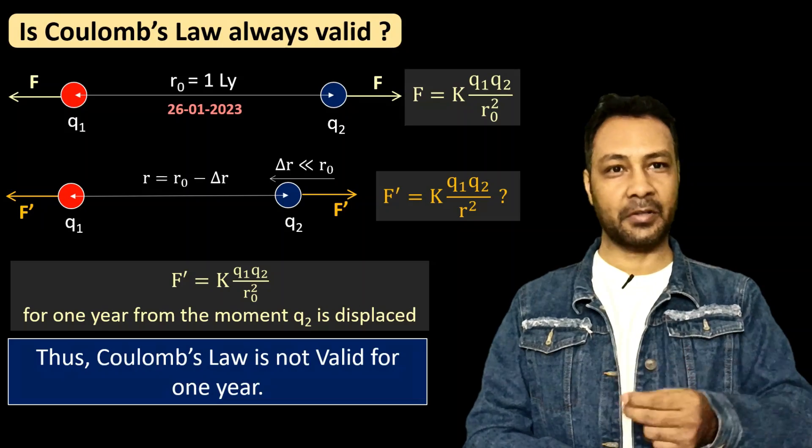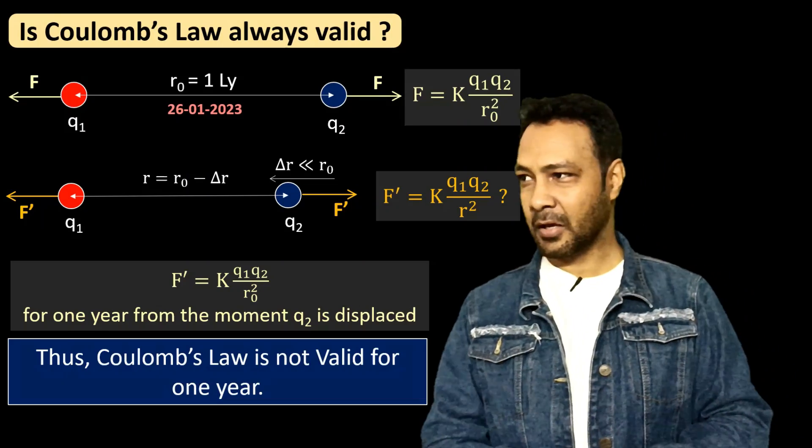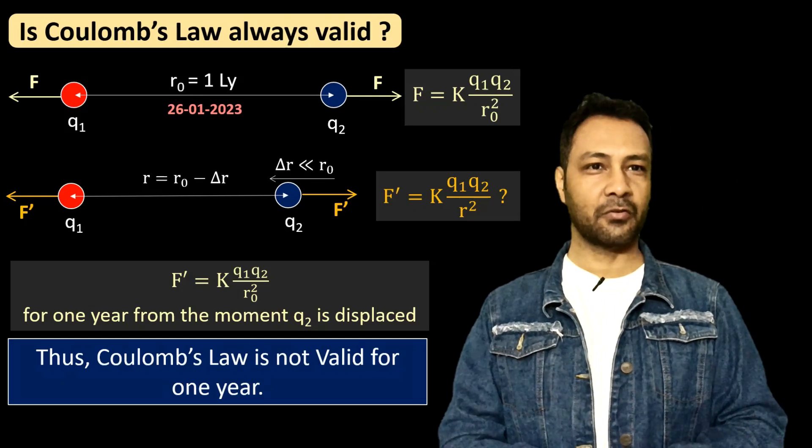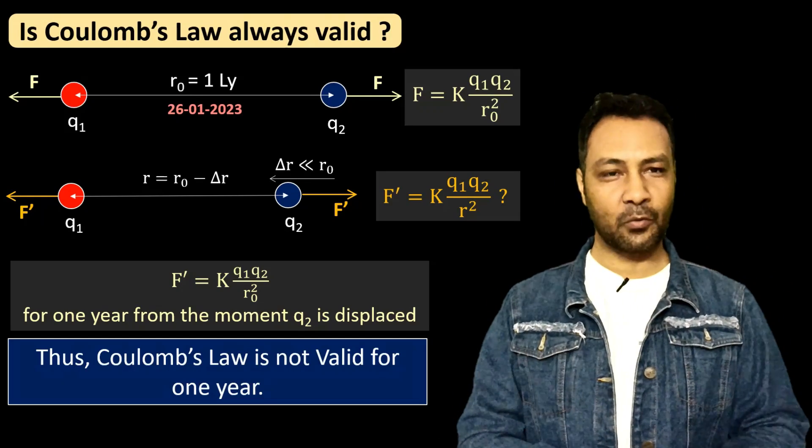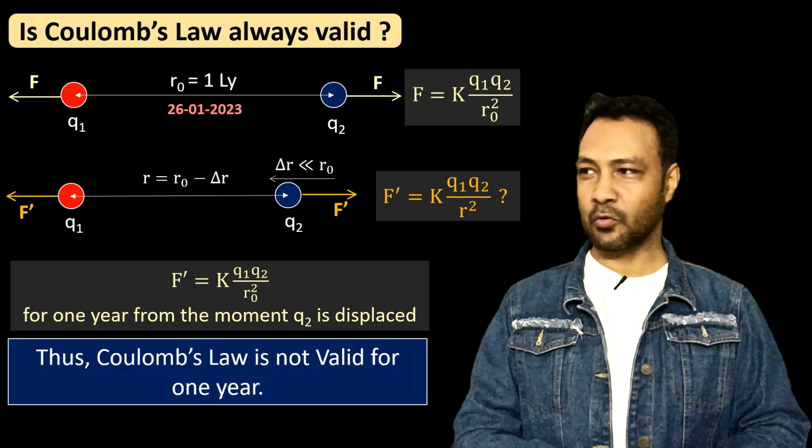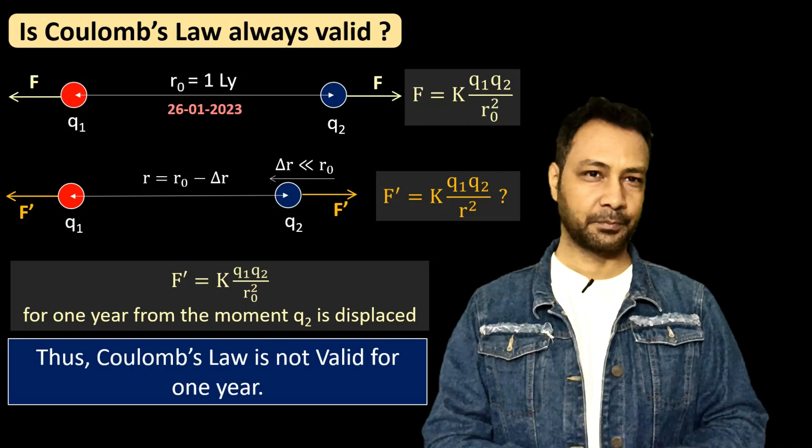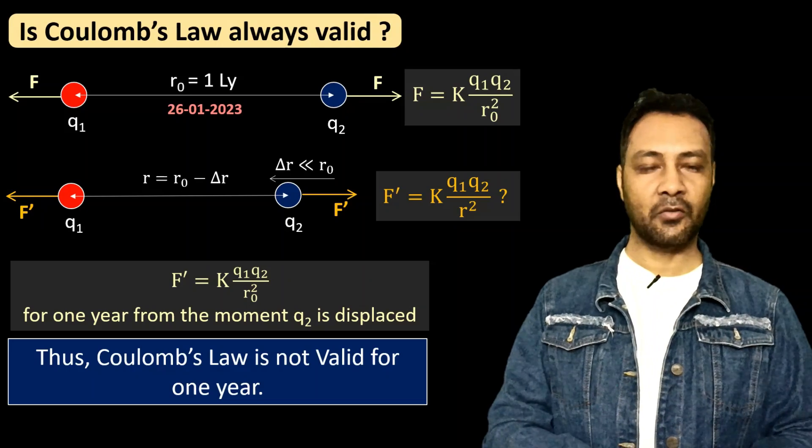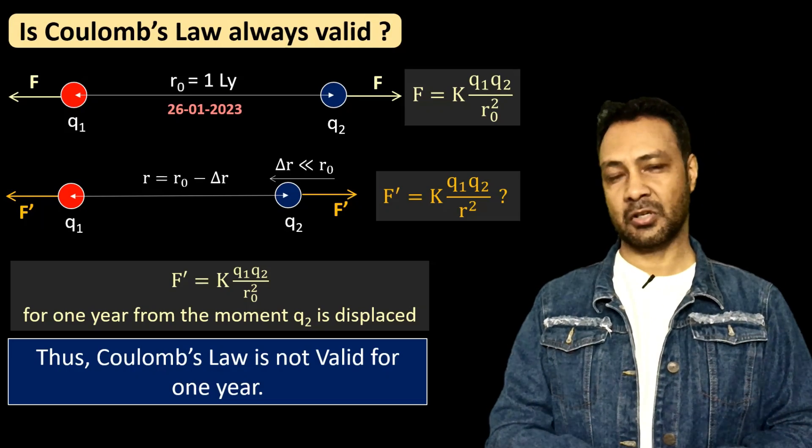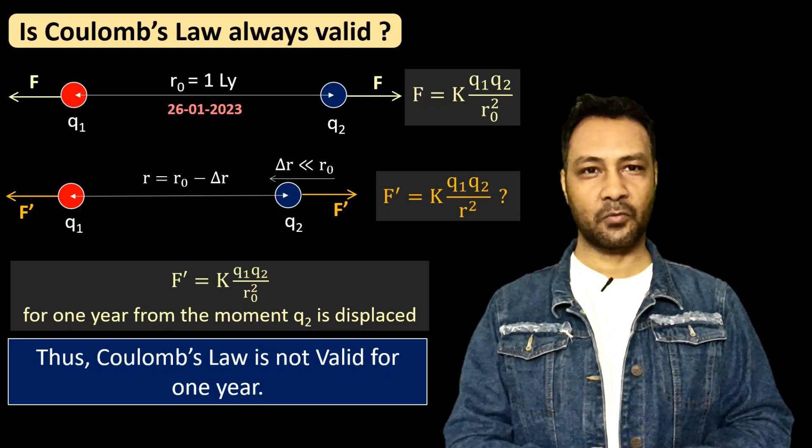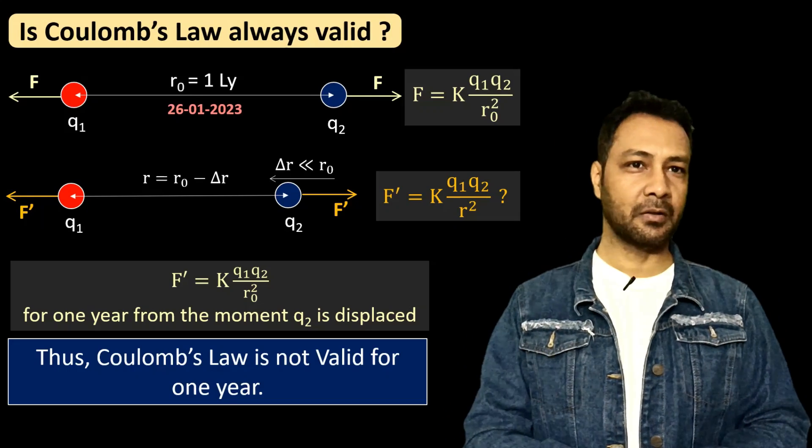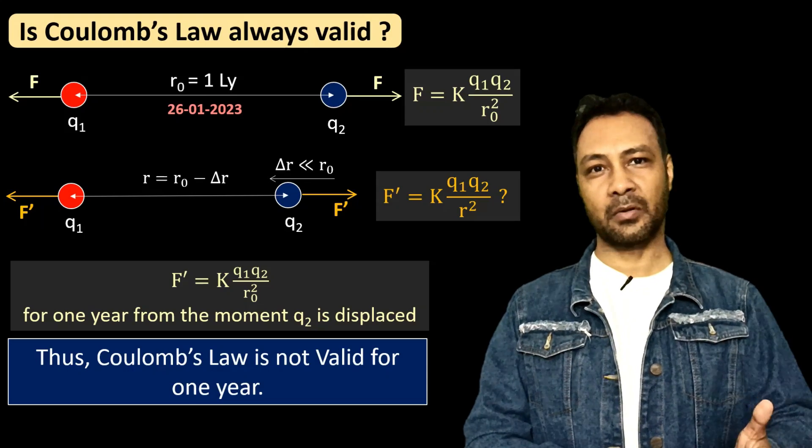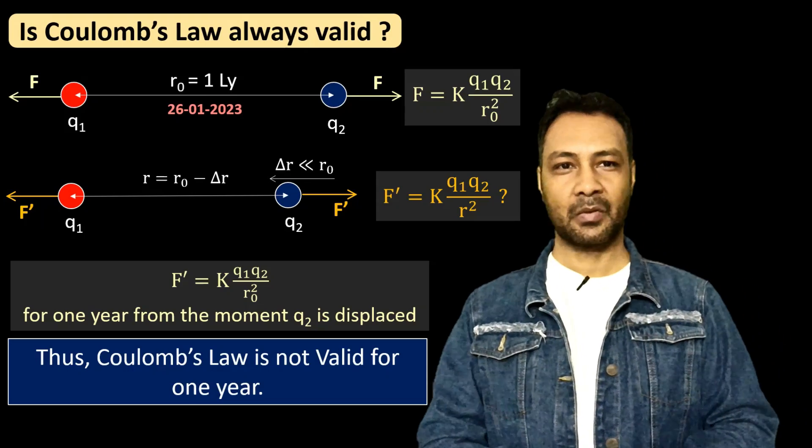But once the information has traveled and q2 remains there, stays there, does not move further, then you can apply F = from after 26 January 2024 you can apply Coulomb's law k q1 q2 by new r² because it takes time for the information to reach to the other charge and the force will be applicable only when the charges know that there was some other charge and for that to happen the information must travel.